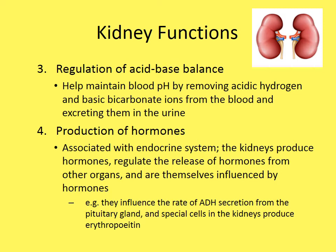The kidneys are also associated with hormone production. Although they are organs rather than glands, the kidneys produce hormones, regulate hormone release from other organs, and are themselves influenced by hormones. For example, they influence the rate of ADH secretion from the pituitary gland.